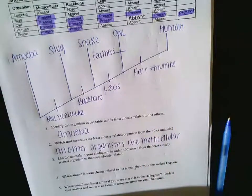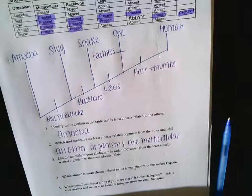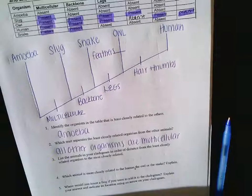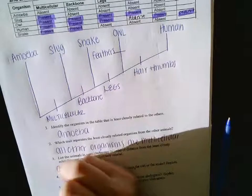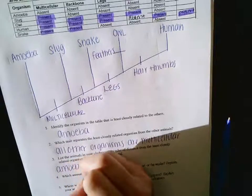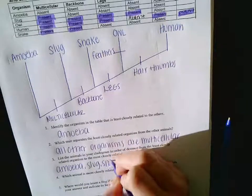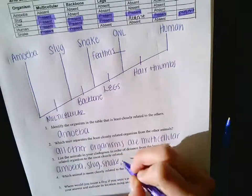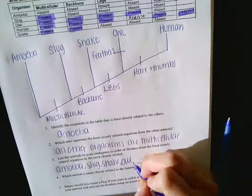Okay, list the animals in the cladogram in order from distance from least closely related to most closely related. Who is the most distantly related? Amoeba. Who would come next? The slug. Oh, so we're just putting them in order. Wow, the snake. Guess what comes next? What comes next? Owl. Thank you.